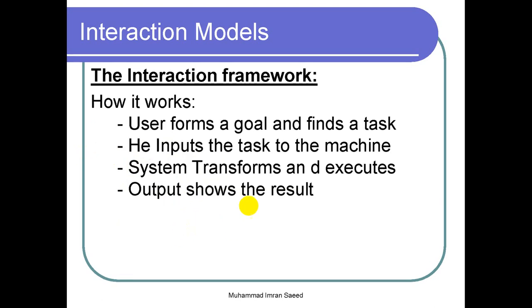In terms of the interaction framework, a user forms a goal and finds a task — he is making an intention to get some job done by the computer. So he inputs the task to the machine, and that machine or system transforms and executes that job. It then shows the output of that job. So now we are dealing with the system and the output, which we were not dealing with in Norman's model.